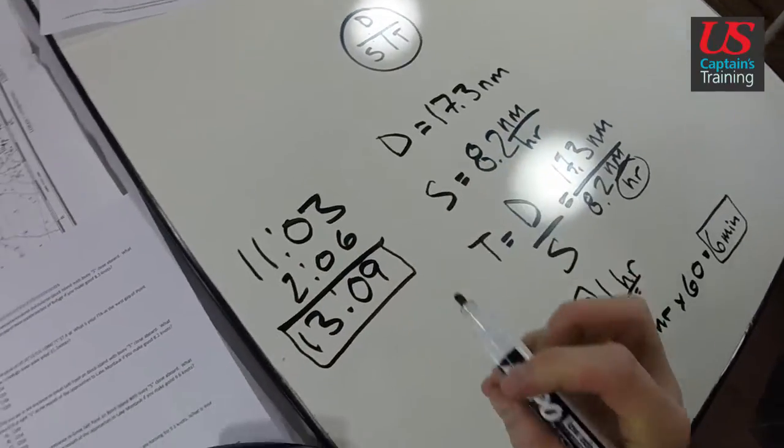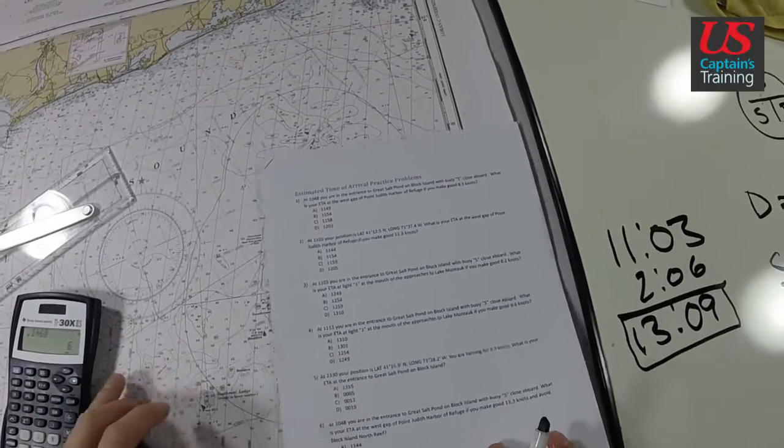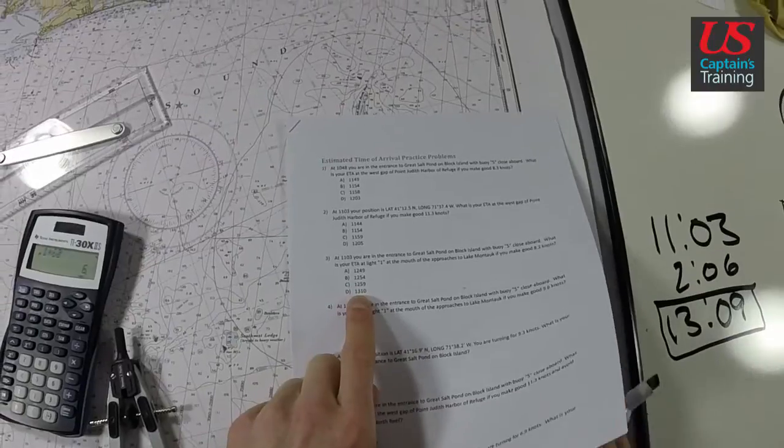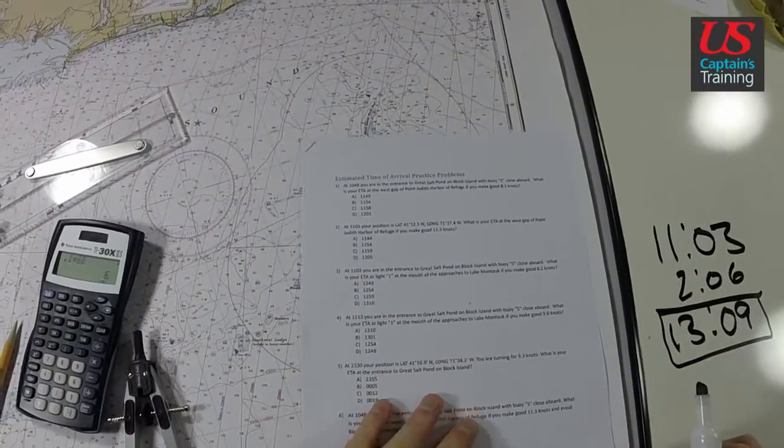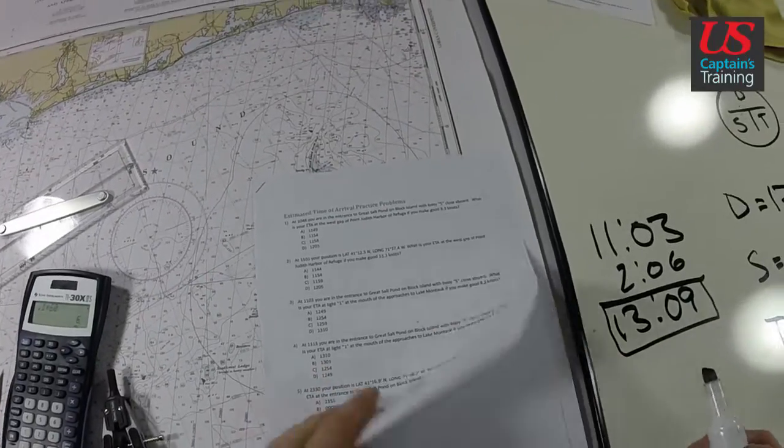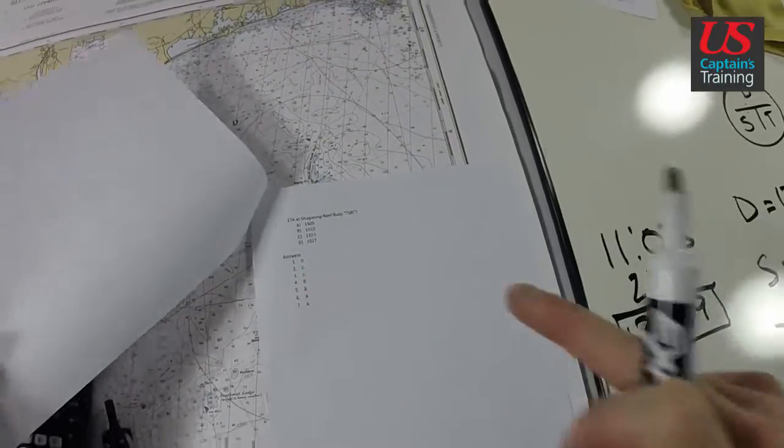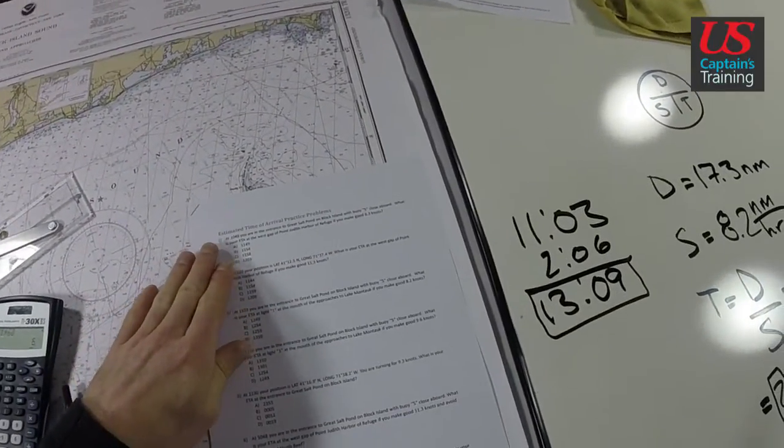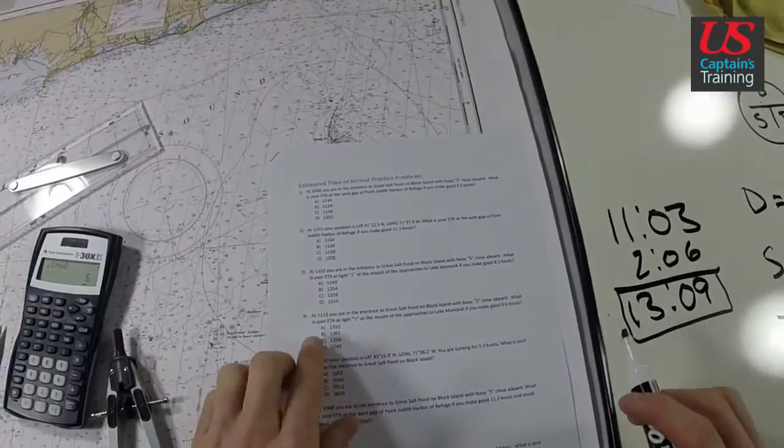Our ETA is 13:09. Let's take a look at this. We have 13:10, which is D, and that's the closest one to us. So answer three is D, we got it correct. The answer to estimated time of arrival practice problem three is 13:09, our closest answer was 13:10, and the answer is D.